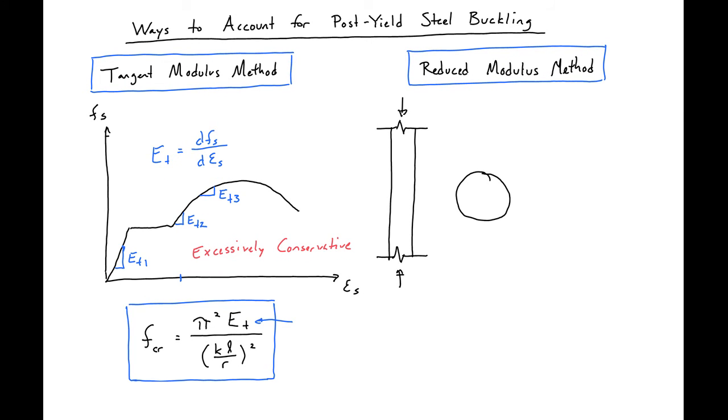What will happen is this bar will start to buckle. And when it starts to buckle, part of the bar will be loaded more. So some portion of the bar will be loaded more and thus be further on our diagram. And the other part will be unloaded and have a lower stress. So maybe come back elastic.